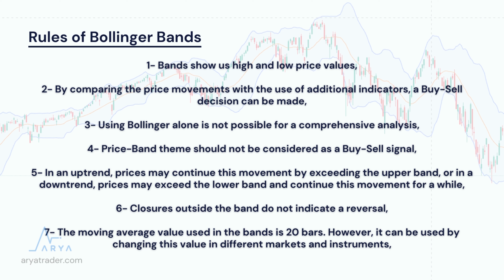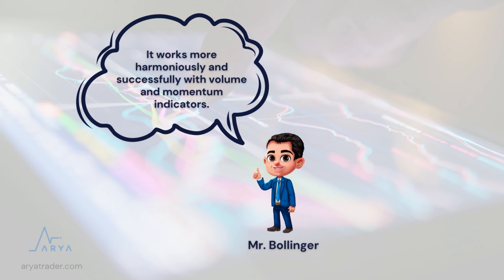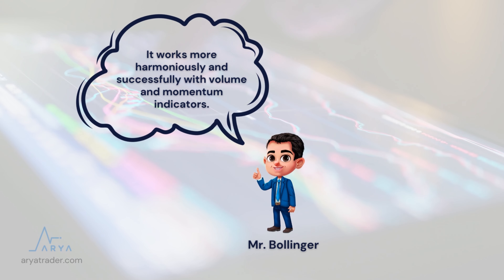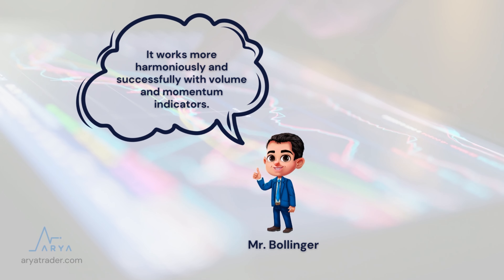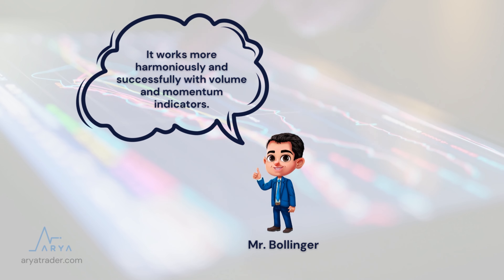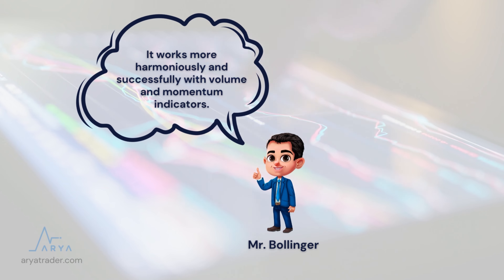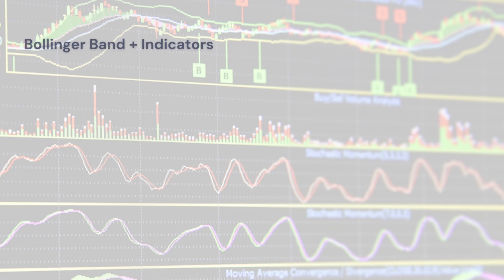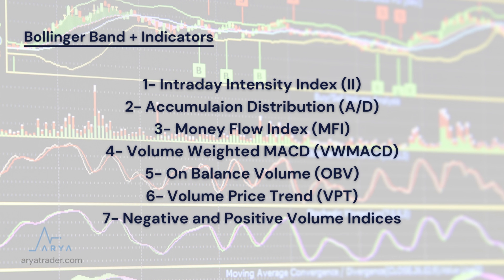6. Closures outside the bands do not indicate a reversal. 7. The moving average value used in the bands is 20 bars. However, it can be used by changing this value in different markets and instruments. Bollinger Bands should be used together with various indicators, since they cannot produce buy-sell signals on their own. Mr. Bollinger also emphasized that bands work more harmoniously and successfully with volume and momentum indicators.